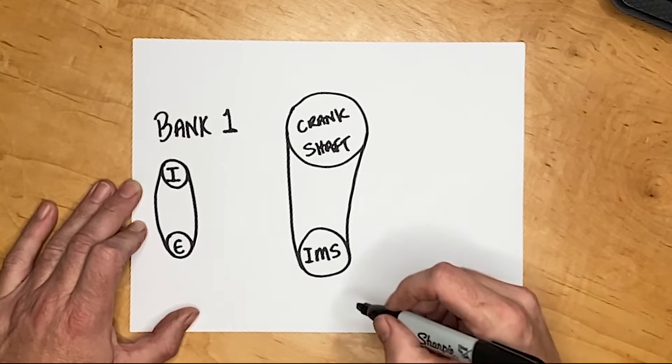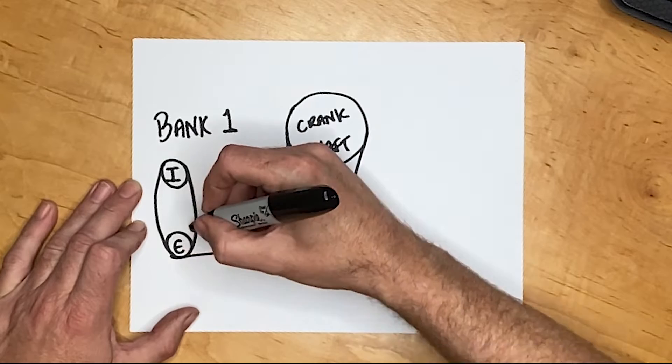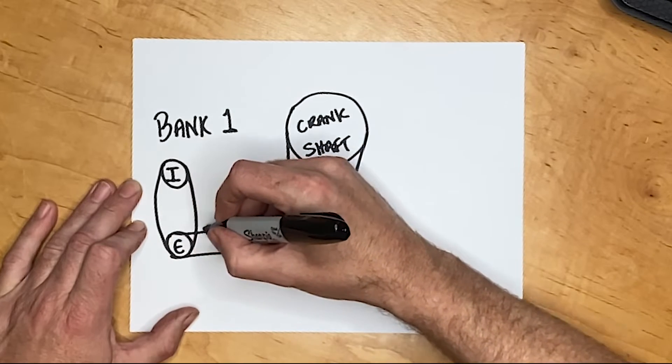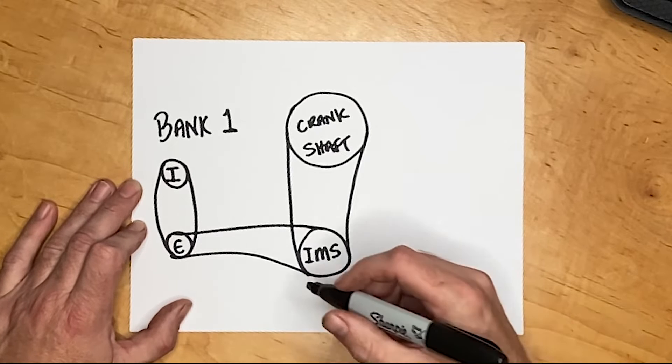Then they get their power from the intermediate shaft with another longer chain. Now with long chains like that they need a guide to stop them from flapping around and take up any slack as they get older.